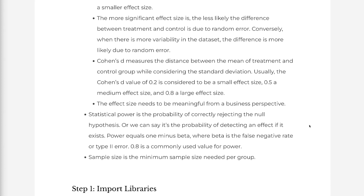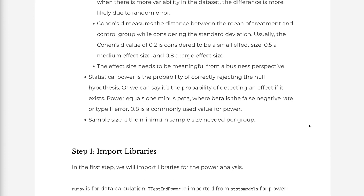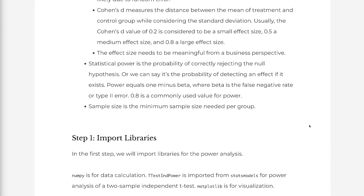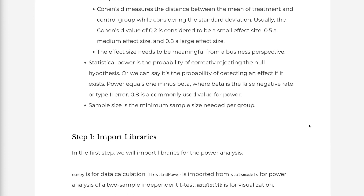Cohen's D measures the distance between the mean of the treatment and control group while considering the standard deviation. Usually, a Cohen's D value of 0.2 is considered a small effect size, 0.5 a medium effect size, and 0.8 a large effect size. The effect size needs to be meaningful from a business perspective.